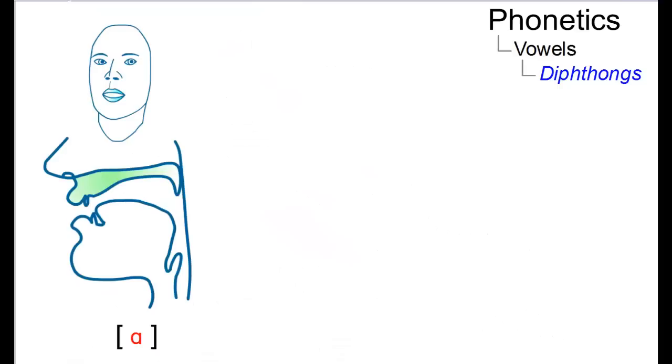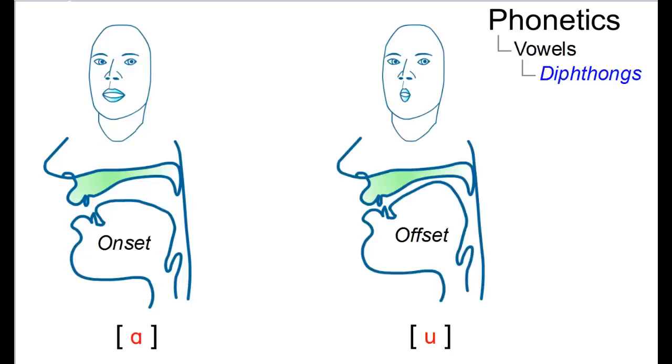Its starting point is a and then we gradually glide into u. So diphthongs consist of an onset, that is the first element of a diphthong, and an offset, the final element. Both onset and offset are linked by a glide.